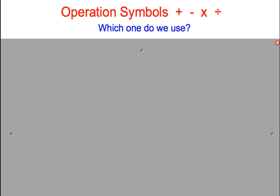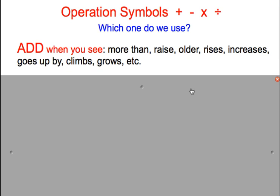Operation symbols are a really important part of writing algebraic expressions. Again, we have the addition sign, subtraction sign, multiplication sign, and division sign. When reading an algebraic number story, there are key words that help you decide which operation to use. Words like more than, raise, older, rises, increases, goes up by, climbs, or grows are synonyms for addition — so anytime you see these words, you will use the addition symbol.